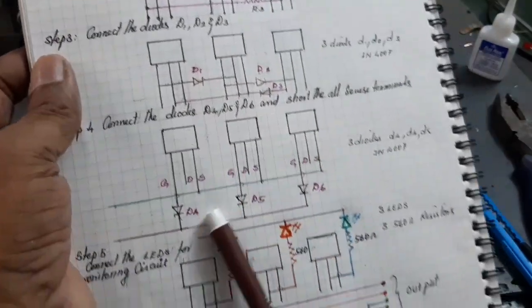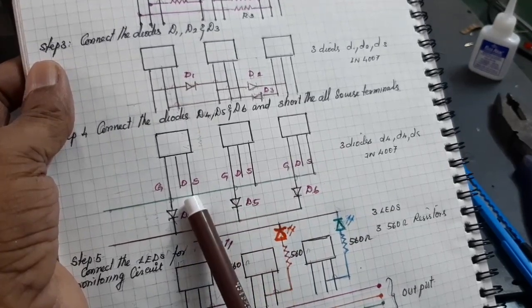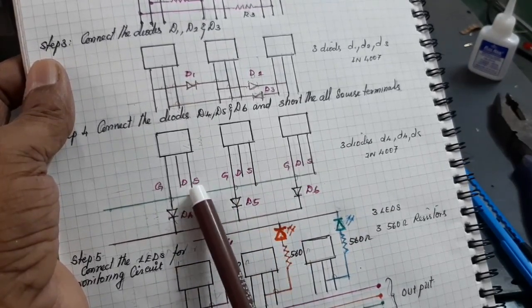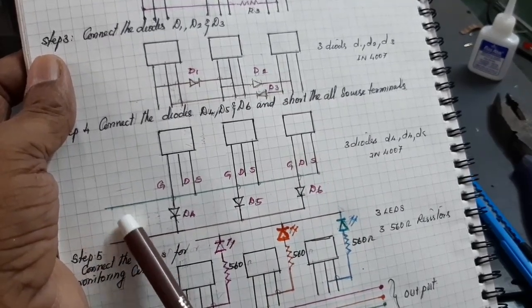Now, 4th step. Short circuit the source terminal of the MOSFET 1, 2, 3 and taken out for the negative point. Next.